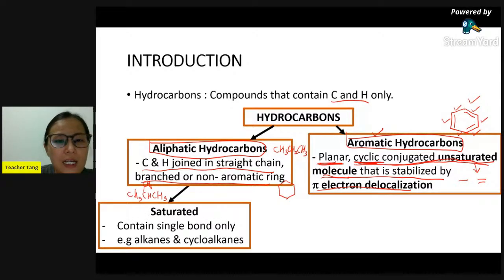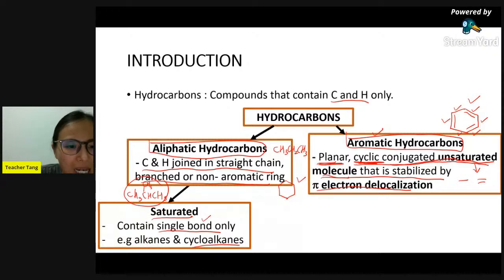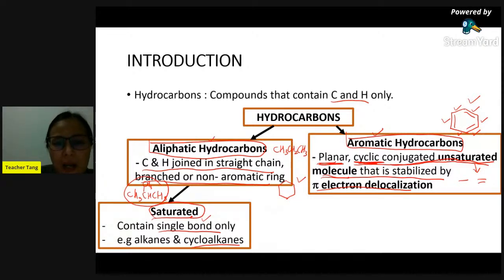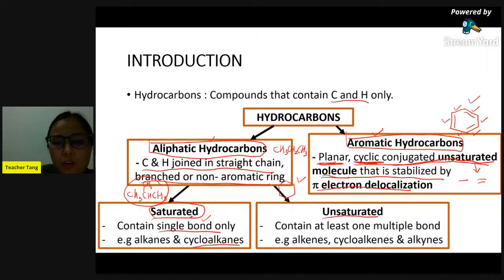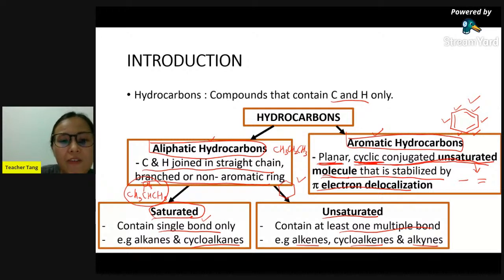For aliphatic hydrocarbon, it can be saturated and also unsaturated. If saturated, it basically has single bonds only - like alkane and cycloalkane. Alkane and cycloalkane only consist of single bonds, so they are saturated aliphatic hydrocarbon. Unsaturated aliphatic hydrocarbon consists of at least one multiple bond, like alkene, cycloalkene, and alkyne - they are unsaturated aliphatic hydrocarbon.